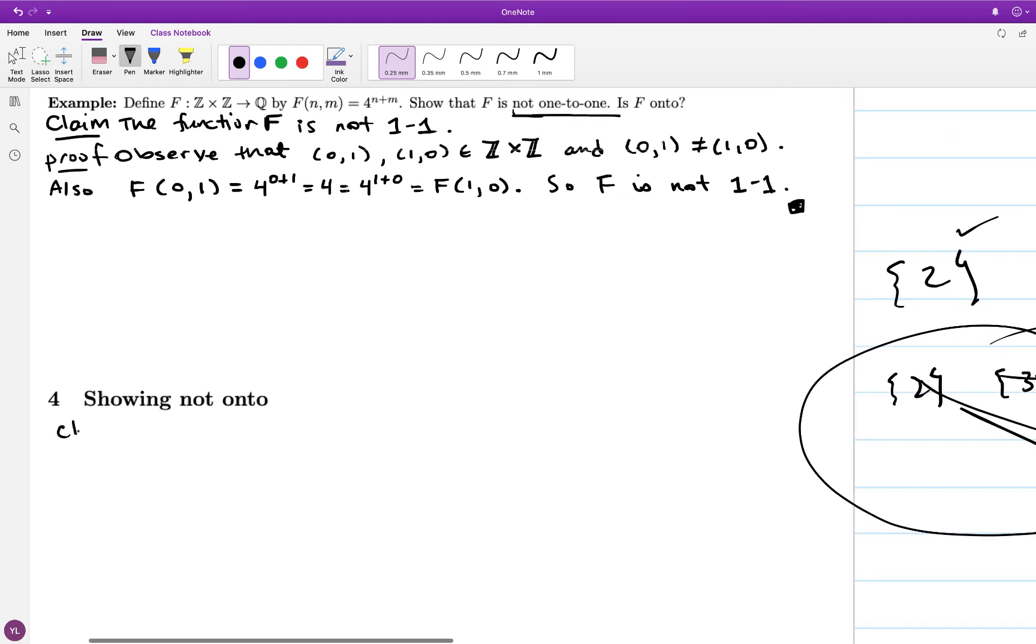This function also ends up being not onto. In order to demonstrate that, I have to provide an example of the co-domain, in this case the set of rational numbers, that is not hit by some element of the domain by the function. So I've got many options here. It turns out that the number 3 is not hit by this function.